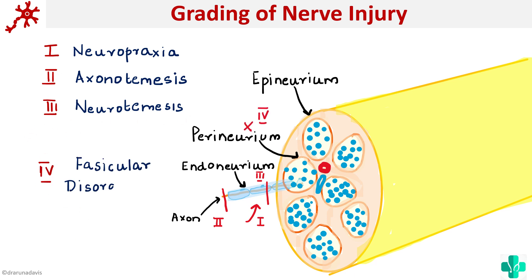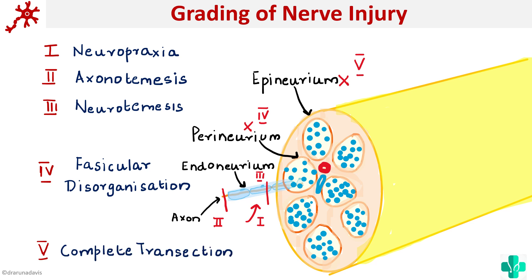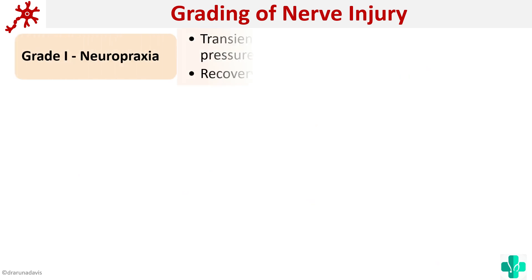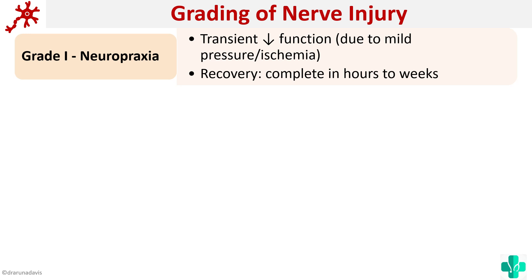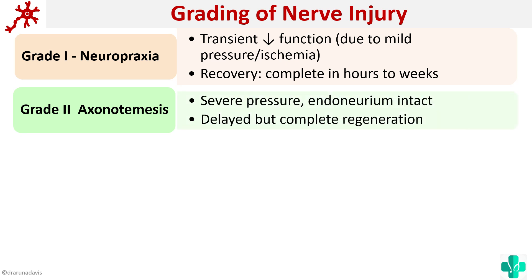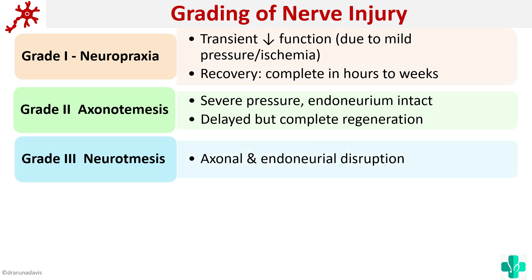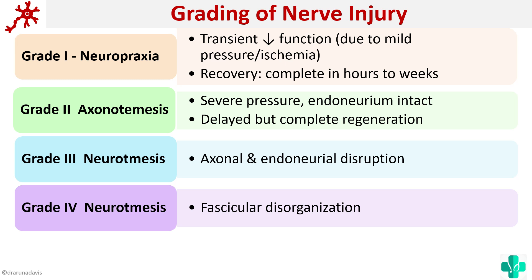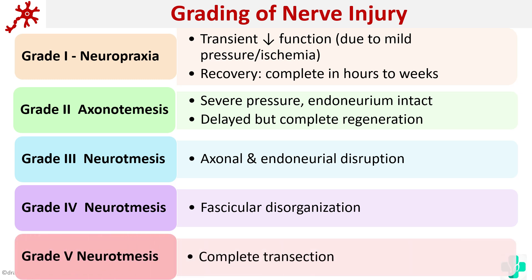In grade 4 the perineurium is affected, so there is going to be physical disorganization. In grade 5 we have complete transection where the epineurium is also affected. Grade 1 neuropraxia is a transient decrease in function due to mild pressure or ischemia; recovery is complete within hours to 2 weeks. Grade 2 axonotmesis is caused by severe pressure, but the endoneurium is intact and recovery, though delayed, can be complete. It is based on the grade of nerve injury that regeneration is decided.